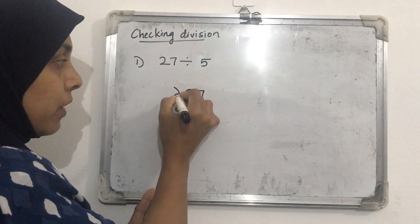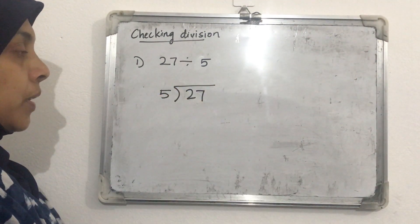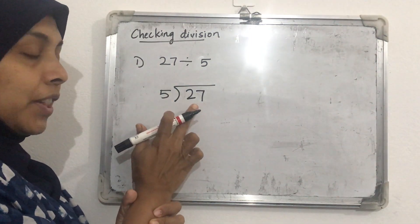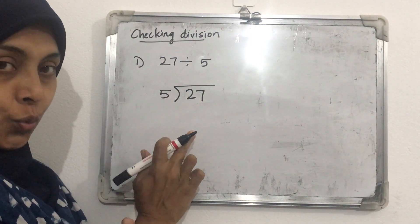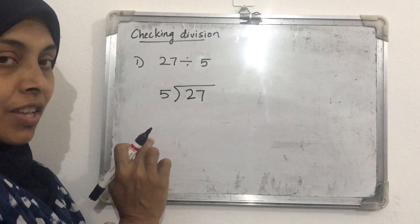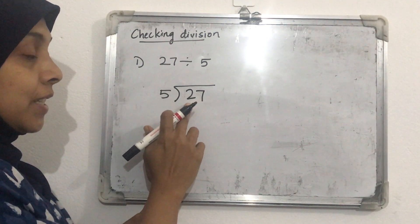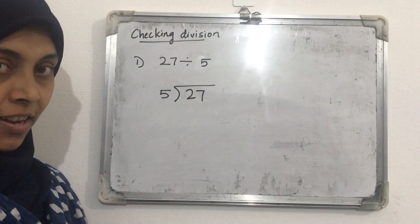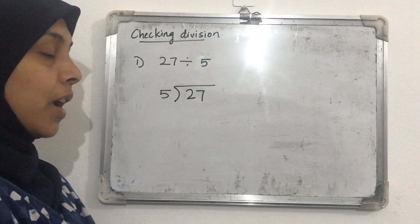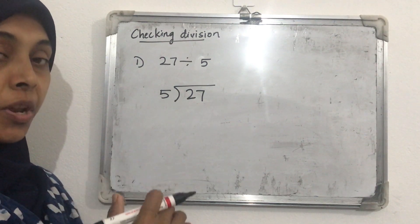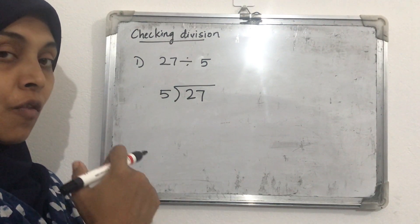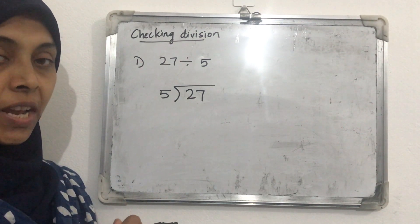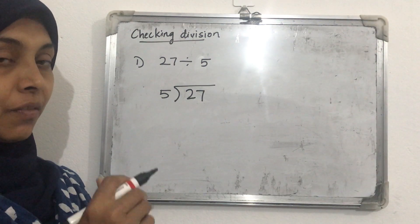We divide 27 by 5 in the normal division form. The first digit in the dividend is 2, which is less than 5, so we take the next digit as well — making it 27. Now, 27 divided by 5: how many 5s are in 27? We refer to the multiplication table of 5: 1 into 5 is 5.